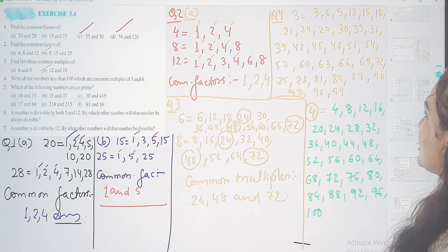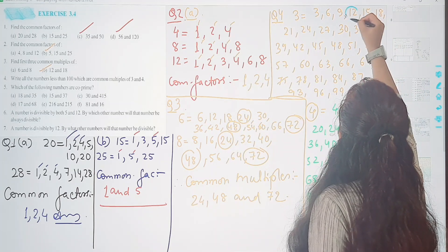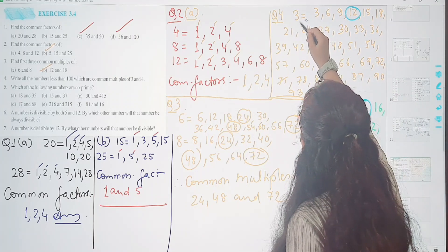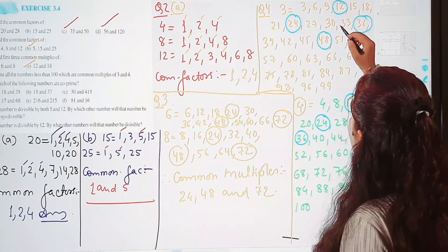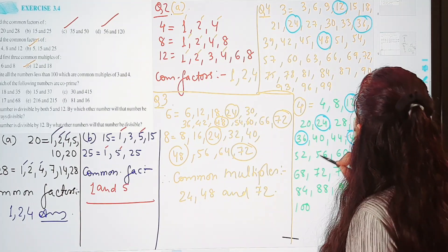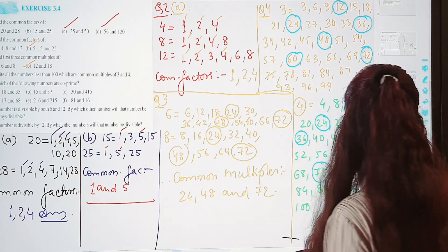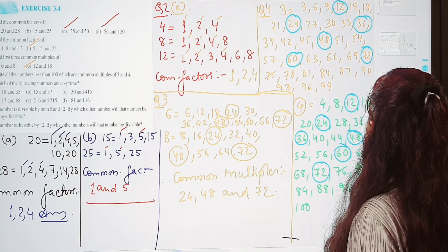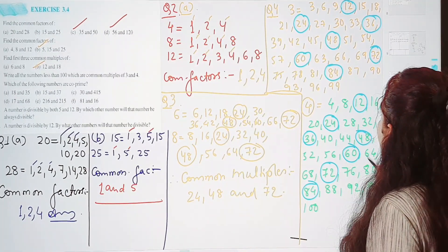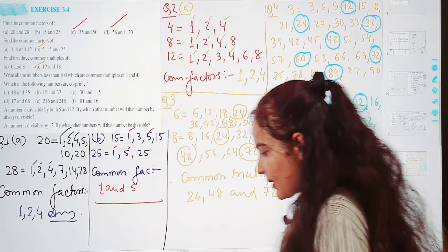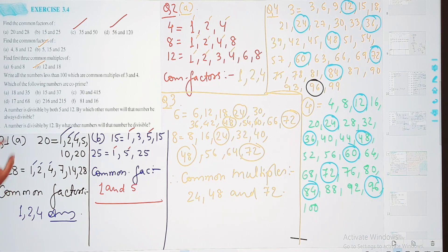Aapne less than common multiples nikal na hai. Dekhate hai kya hai common? Pehla toh sabse pehla toh 12 hai. Then hai 24. Then hai 36, duno me hai 36. Then hai 48. Then hai 60. Then 72. Then 84 hai. Then 96 hai. Tho ye hai aapke sare common multiples which are the multiples of 3 and 4.